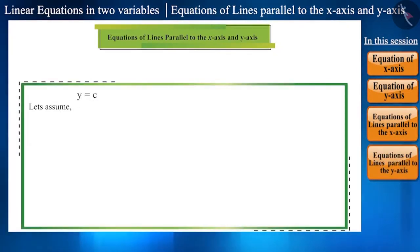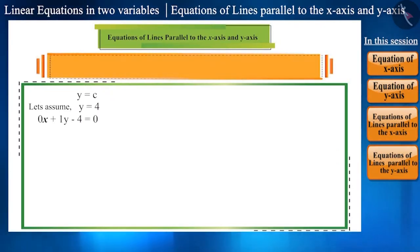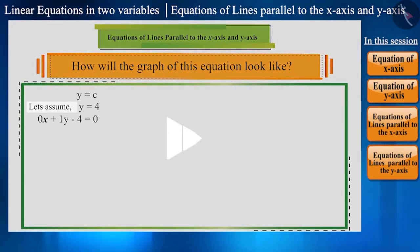Now, let's assume the value of y as 4 and also write it in the form of linear equations in two variables as 0x + 1y - 4 = 0. Can you tell how will the graph of this equation look like? You may pause the video and think of the answer.